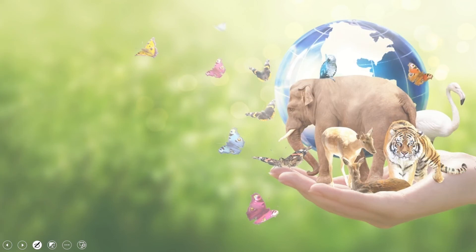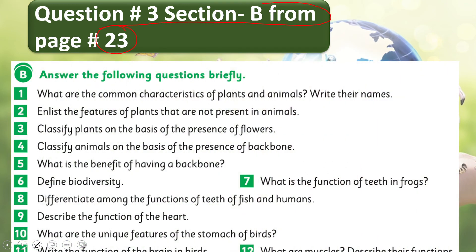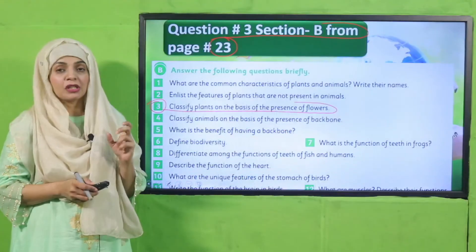Now is the time for homework. What you need to do is complete question number 3 from section B on page number 23: classify plants on the basis of the presence of flowers, classifying them among flowering and non-flowering plants, and give the definition for both.